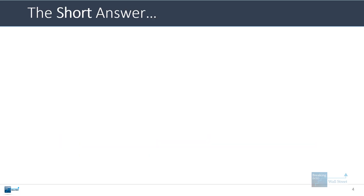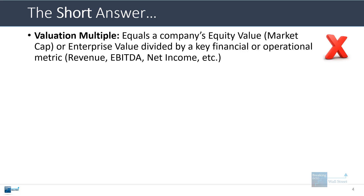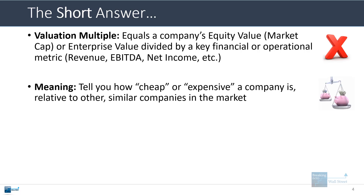I'm going to start with the very short answer and then go into more detailed explanations. A valuation multiple equals a company's equity value or enterprise value divided by a key financial or operational metric, such as revenue, EBITDA, or net income. It tells you how cheap or expensive a company is relative to other similar companies in the market.